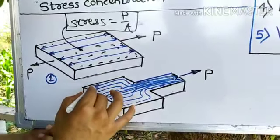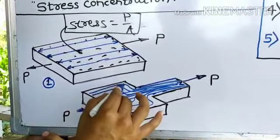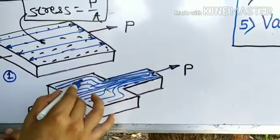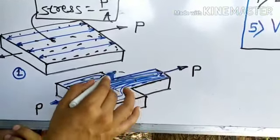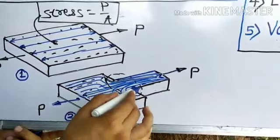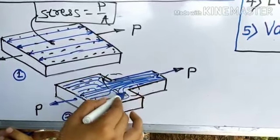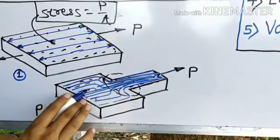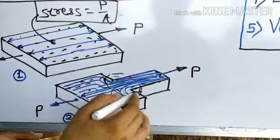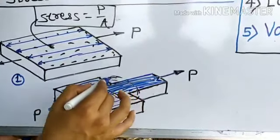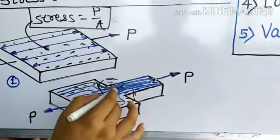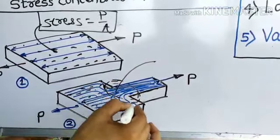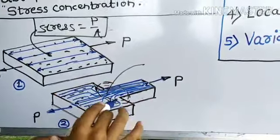Due to this shape change, the normal stress line will be disturbed and will move around the discontinuity — stresses will be unevenly distributed. At this sudden change in the cross-section, stresses will get concentrated more near to the discontinuous portion. This is the stress distribution or stress concentration portion due to sudden change in cross-section, so here is where stress concentration occurs — at the sudden change in cross-section.